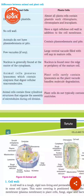Assalamu alaikum dear students, hope you all are fine. Today in this video we are going to discuss the animal cell and the plant cell — specifically the main differences between them, which organelles are present in the animal cell and which are absent. We are going to start with two columns: one for animal cell and one for plant cell. Animal cells do not contain plastids.